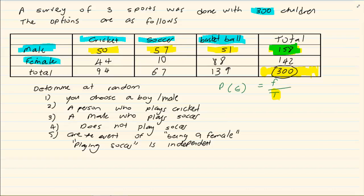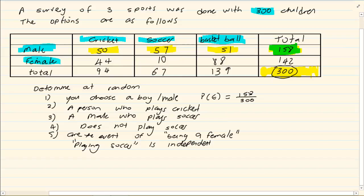So if I want the probability of choosing a boy, I know my probability formula. It is P(E) is equal to the favorable event over the total. So what was my favorable? My favorable is 158 over what was my total? 300. Can you see? You just need to see what am I talking about.